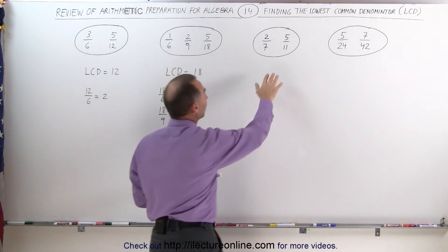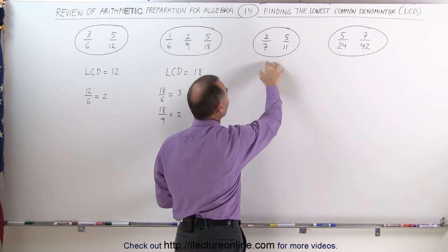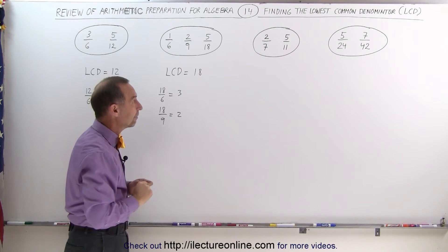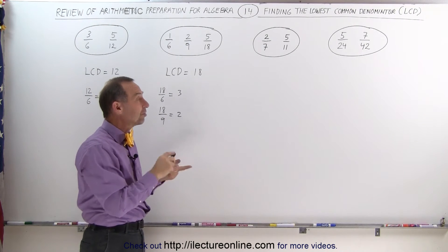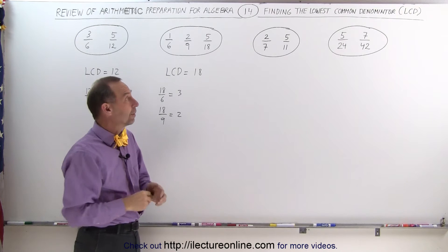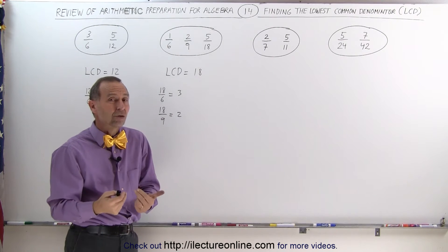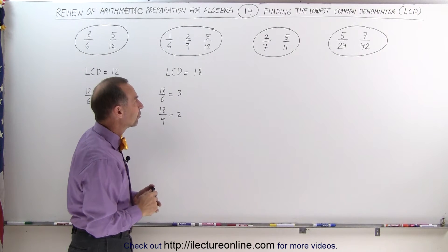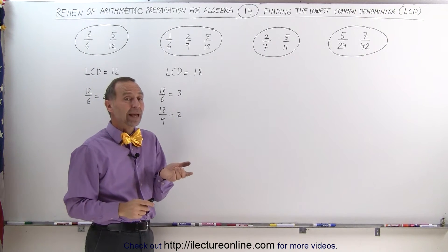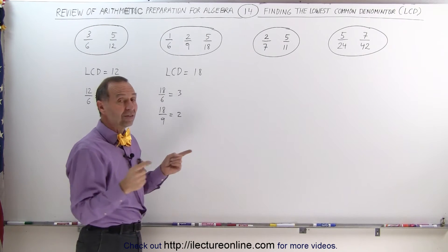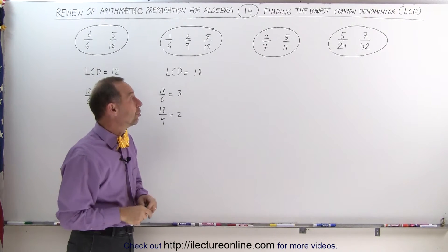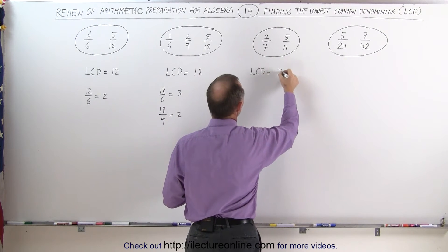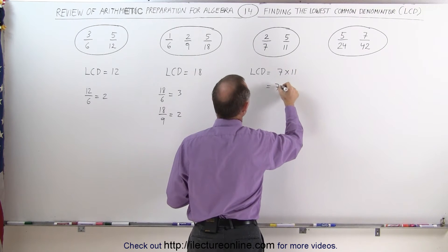When we go to the next set of fractions, notice that 7 does not fit evenly into 11. We also notice that both denominators, 7 and 11, are both prime numbers, which means they cannot be broken down into smaller numbers or into a product of prime numbers. In that case, the lowest common denominator is simply the product of the two denominators. The LCD is equal to 7 times 11, which is equal to 77.